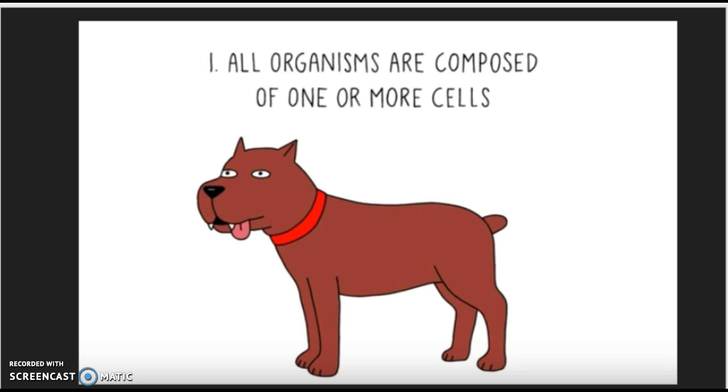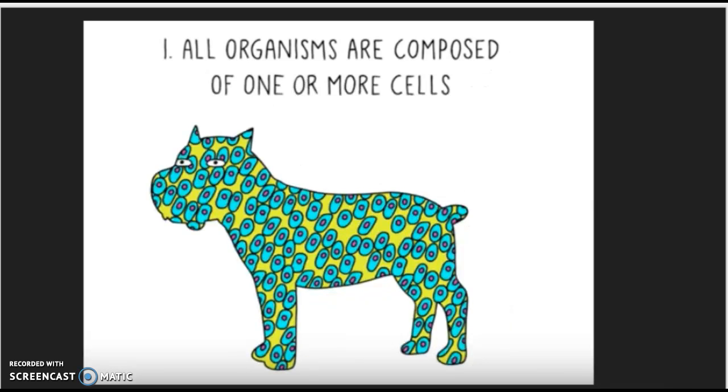The first part is that all organisms are composed of one or more cells. If you were to look inside of anything that is living, you would see that it is composed of all kinds of different cells.